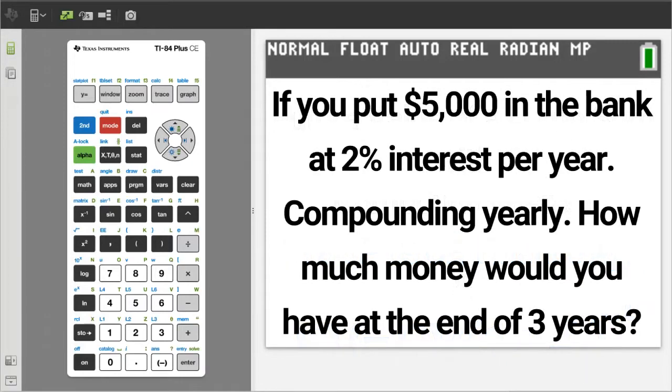The problem: If you put $5,000 in the bank at 2% interest per year, compounding yearly, how much money would you have at the end of 3 years?